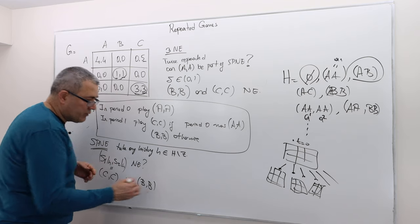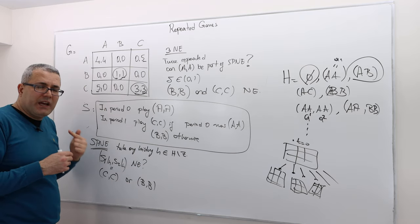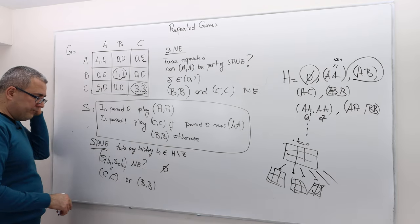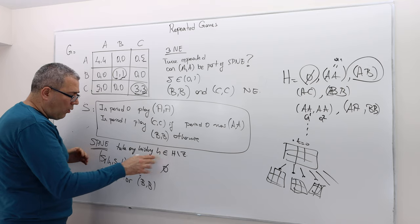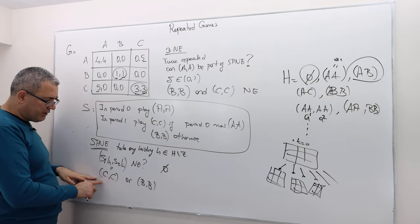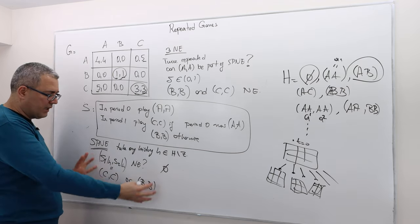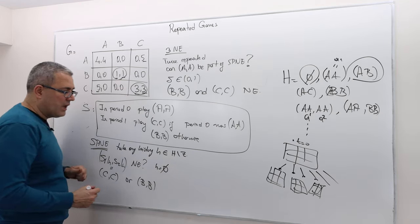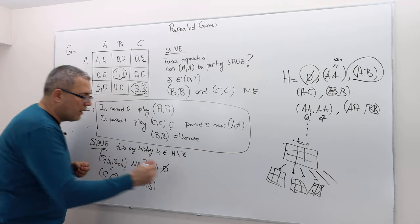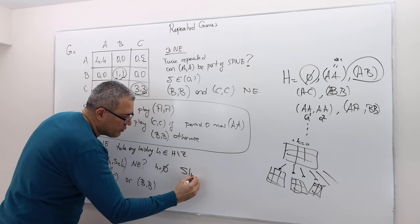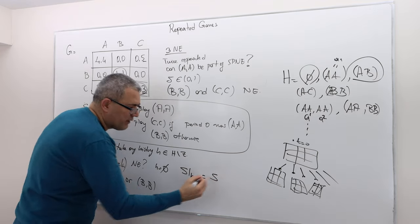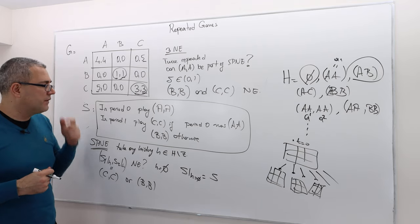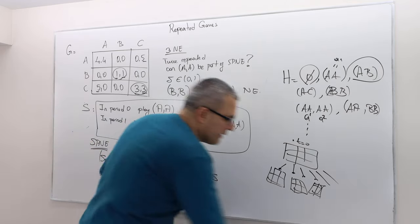There is only one more history to check: the null history. The continuation strategy after the null history is S itself. So the question is: is S a Nash equilibrium of the game itself? Let's check that.